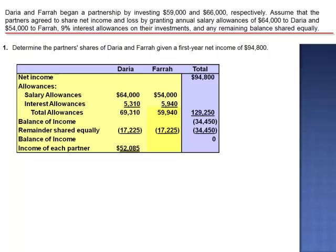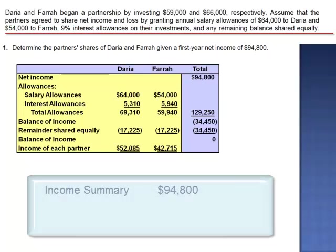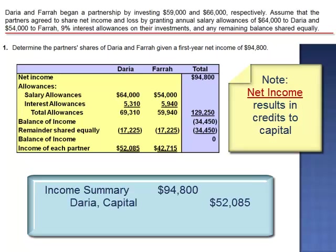Farah's share of income is $42,715: $59,940 minus $17,225. The journal entry to record this would be a debit to income summary for $94,800, a credit to Daria's capital account for $52,085, and a credit to Farah's capital account for $42,715.